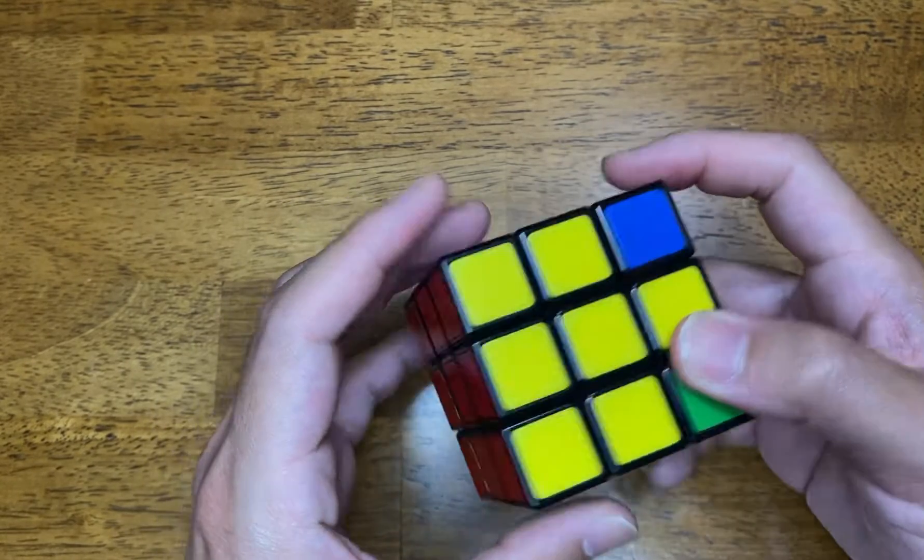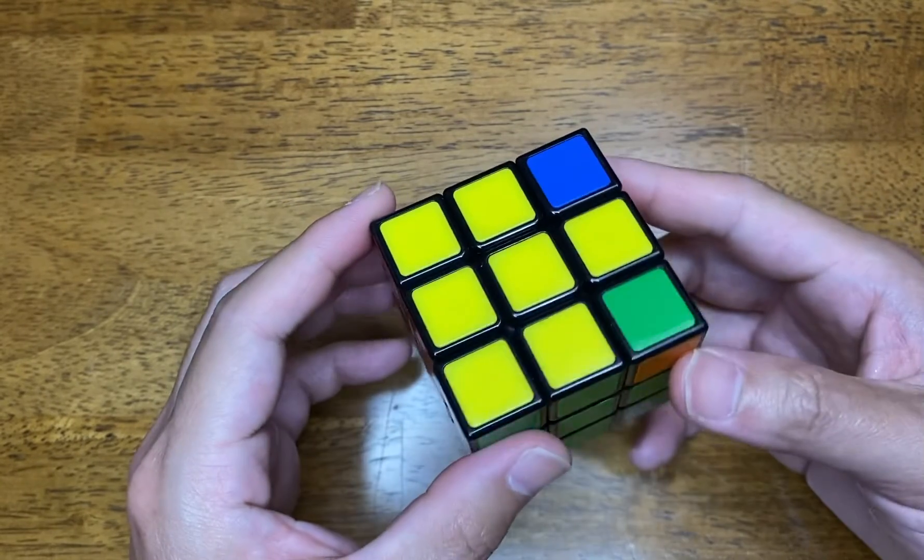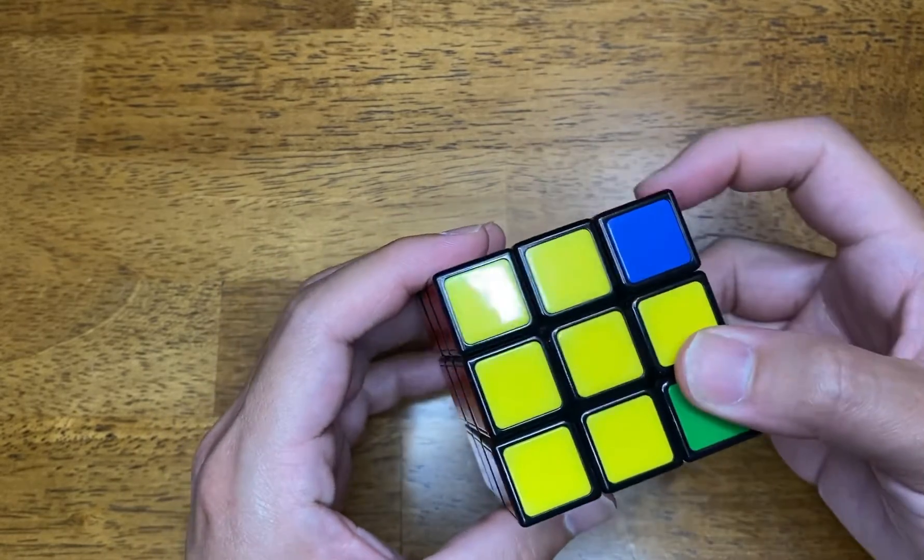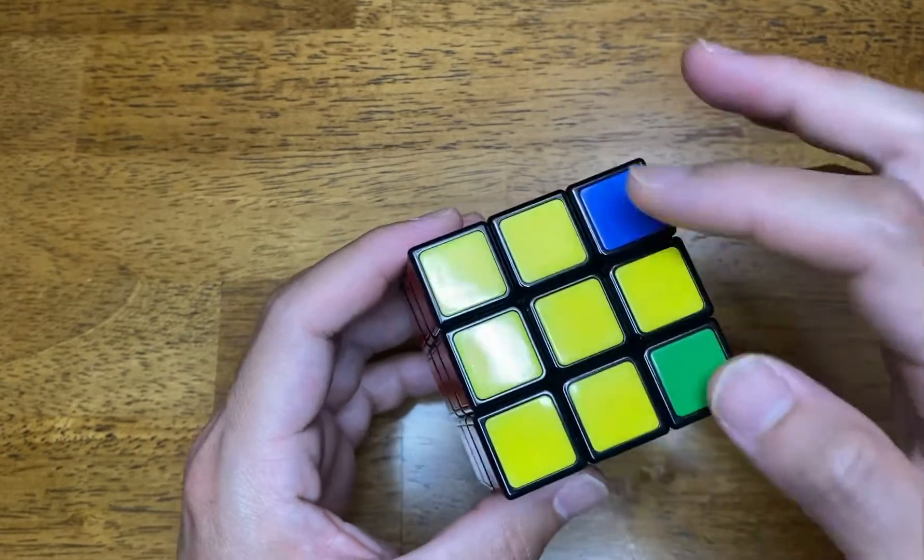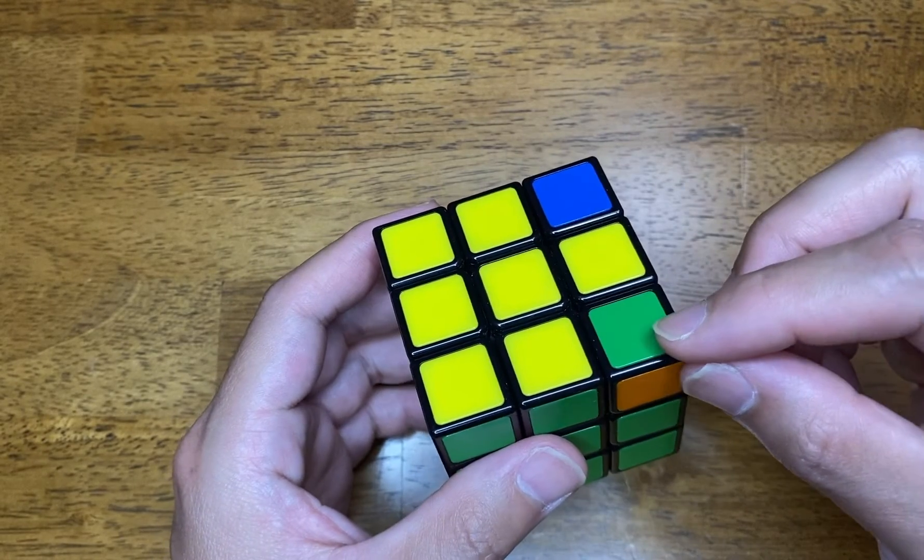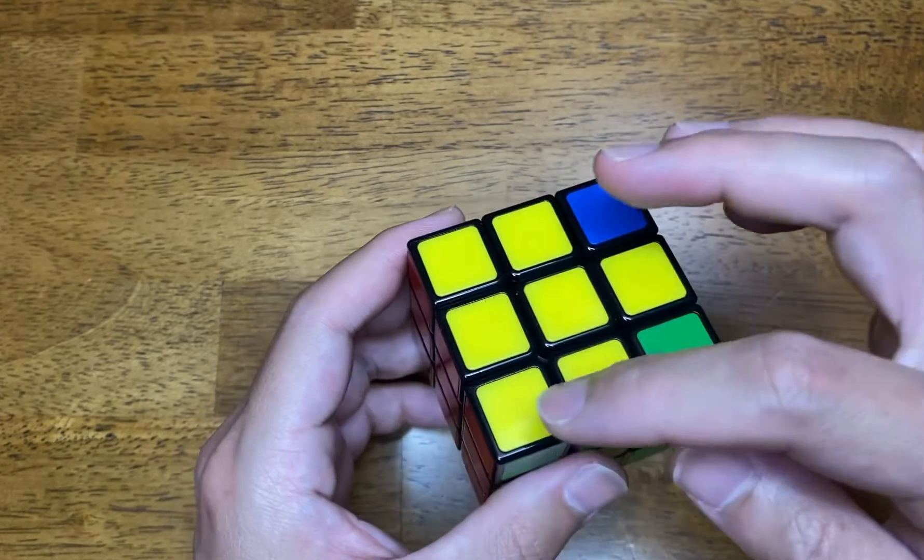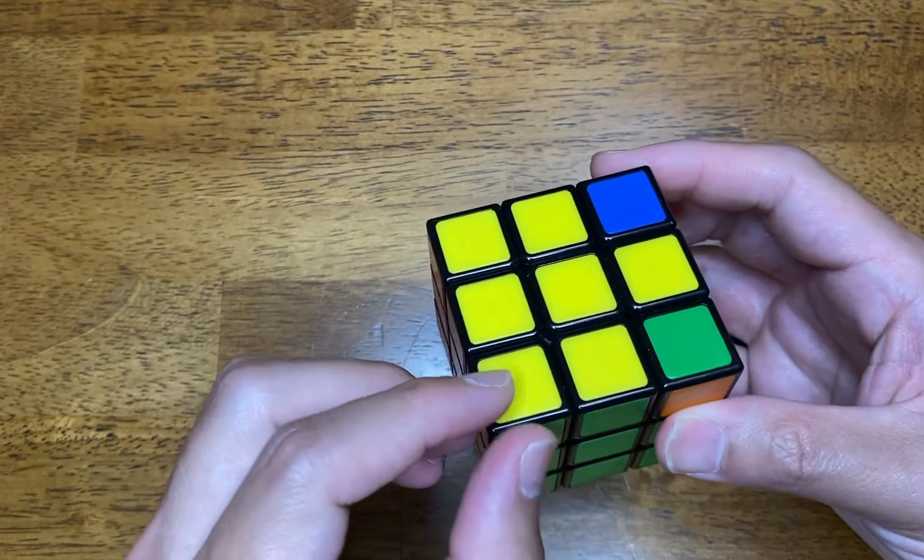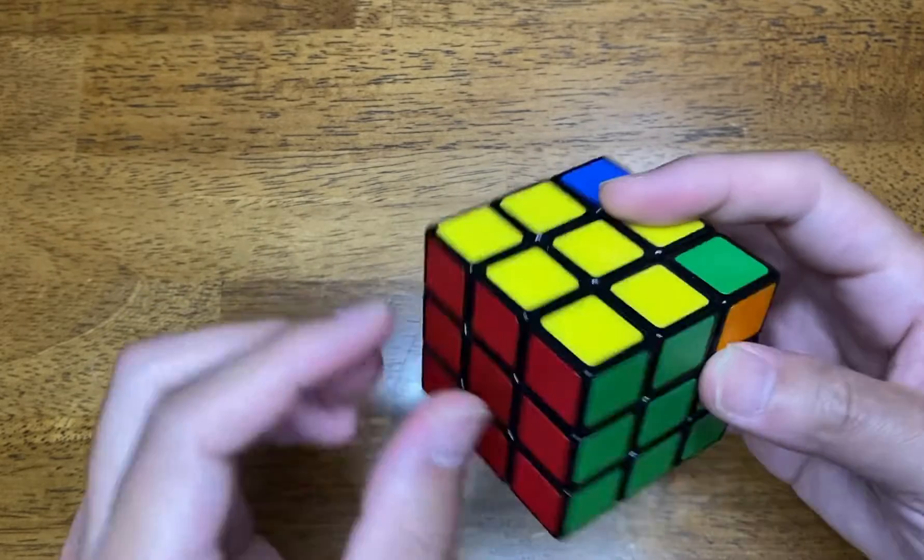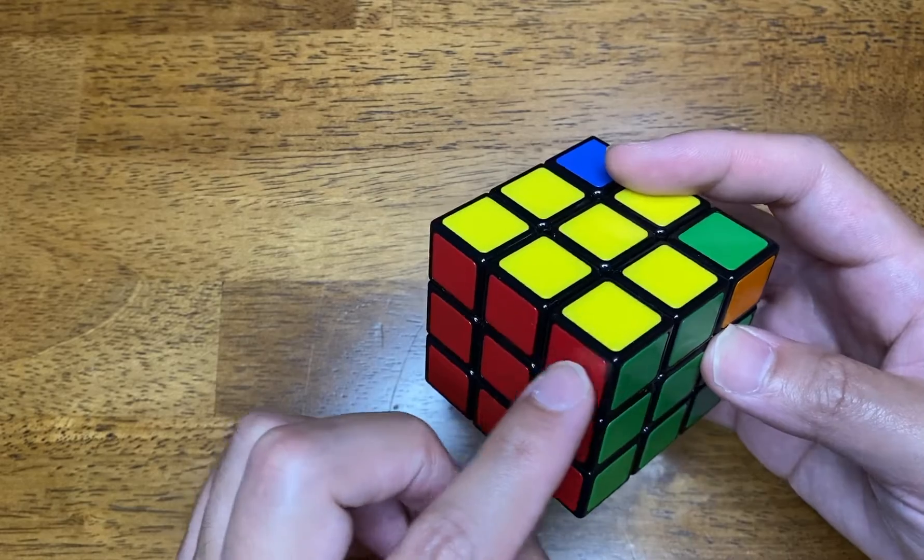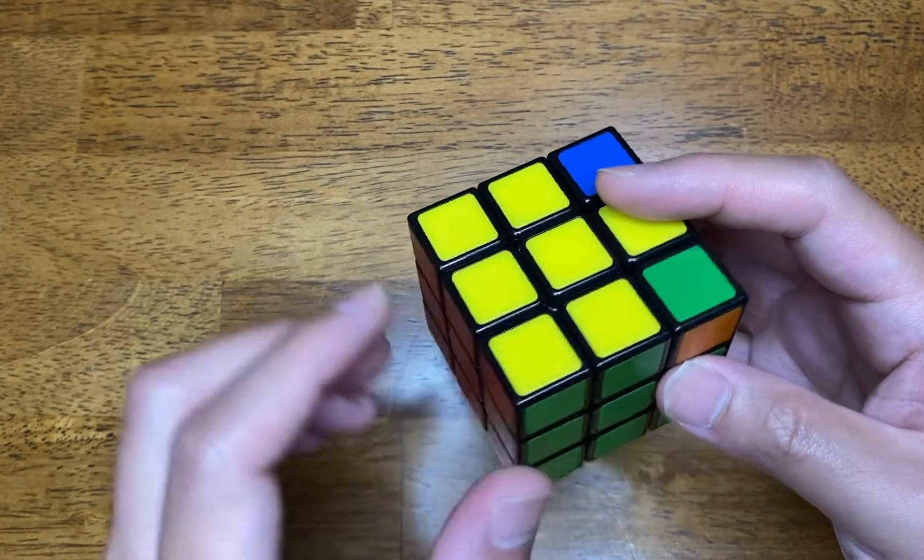Before we do that, just going back to how these corners lined up, you'll come across different situations where two of these corners are already in place, so we'd have the green, red, and yellow in place already,